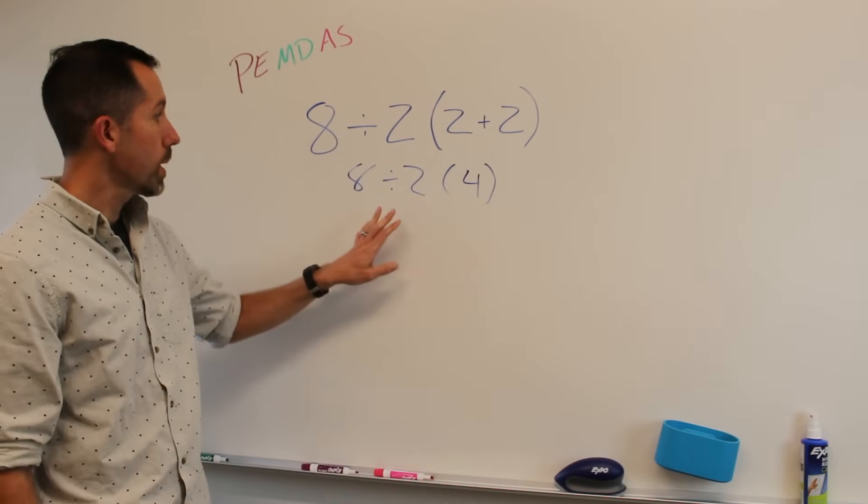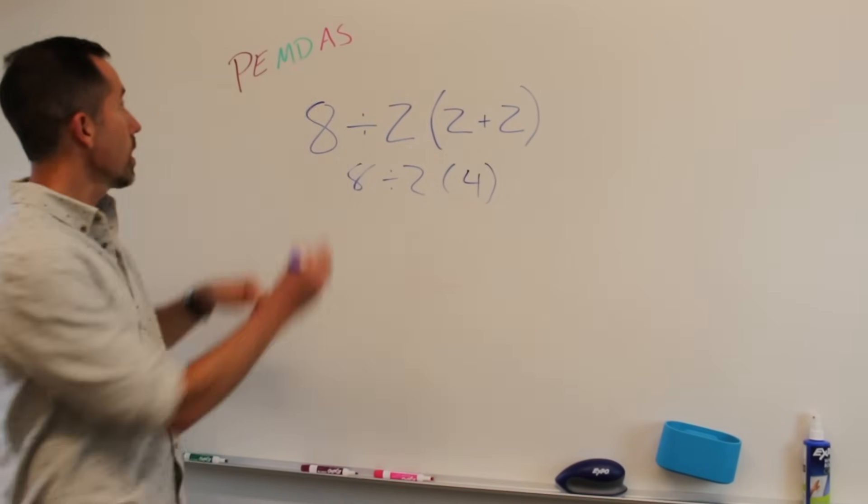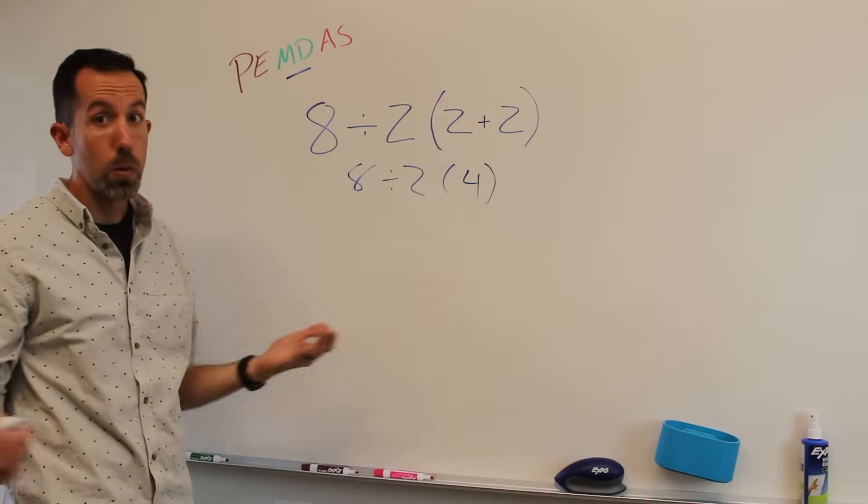And this is where people get stuck because you've got a division statement and a multiplication statement. And technically, those are together. So what do you do first?